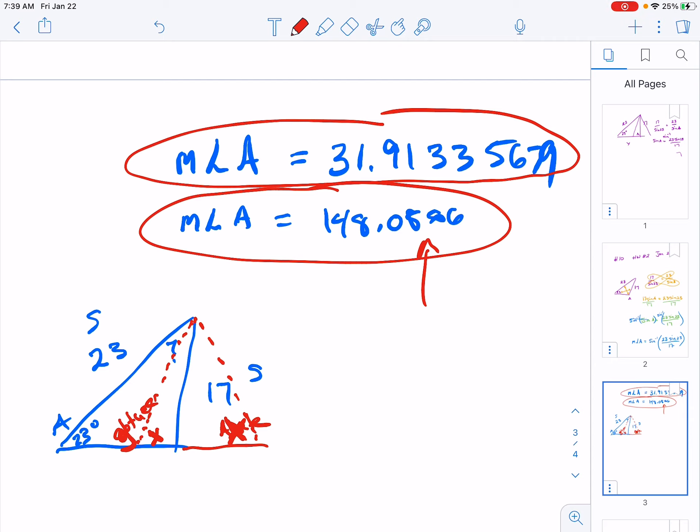And then again, because of this, there's two possibilities for X as well. Depending on whether we're using the obtuse or acute angle for angle A, that will change your answer for the side that has the X on it. Since we're going with the obtuse angle for angle A, the 148 degree measurement, use that to find X.